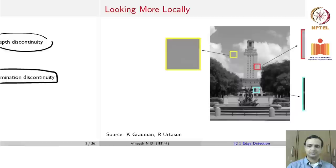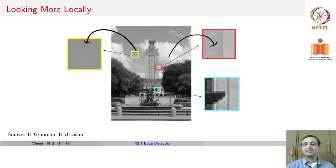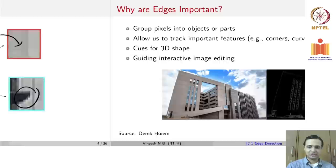If you look more locally at these regions, where there is no edge the image looks fairly smooth, but where there is an edge there is some kind of transition in the image pixels in a particular direction. Edges can be in different directions in an image — in one particular case there is a change in intensities, and in another region there are many kinds of edges in different orientations. We ideally want to be able to detect all of these in an image.